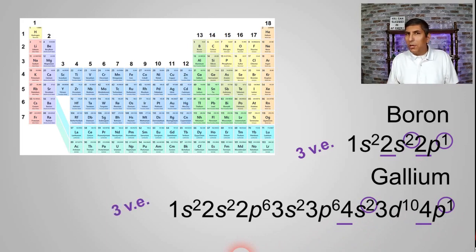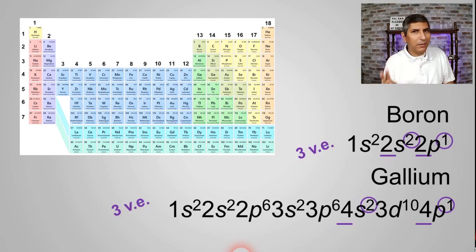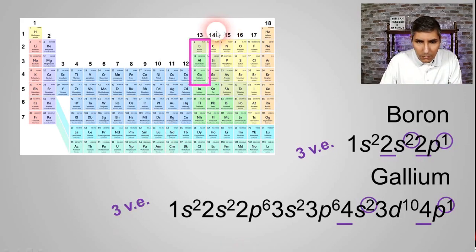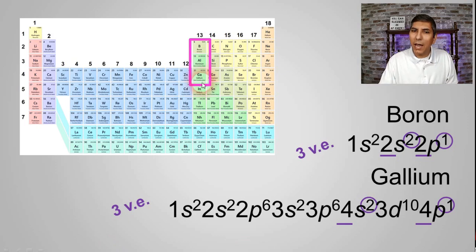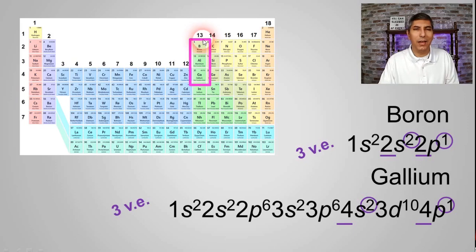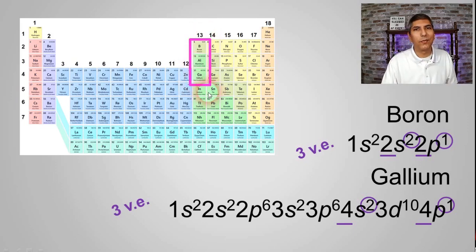We've done three different elements and found that all three of them have three valence electrons. Where are they located on the periodic table? Boron, aluminum, and gallium are all in the same group — group 13. And they all have three valence electrons. So is that a coincidence? I don't think so.